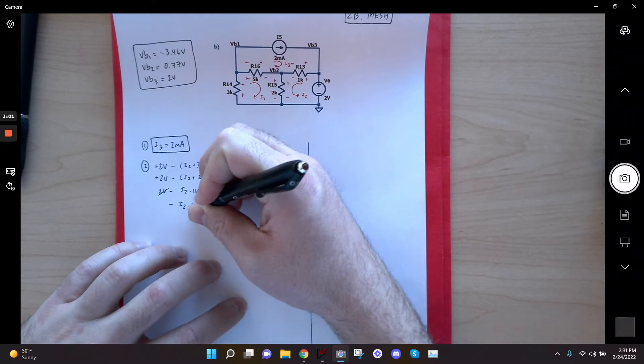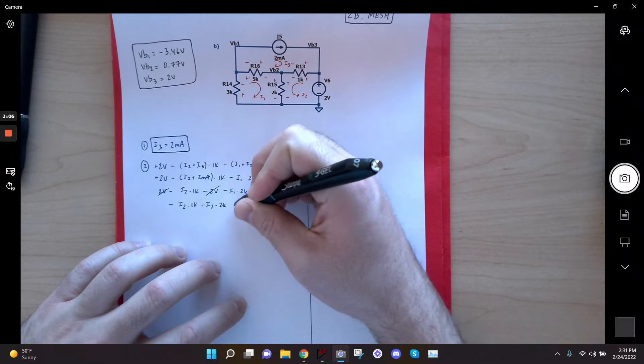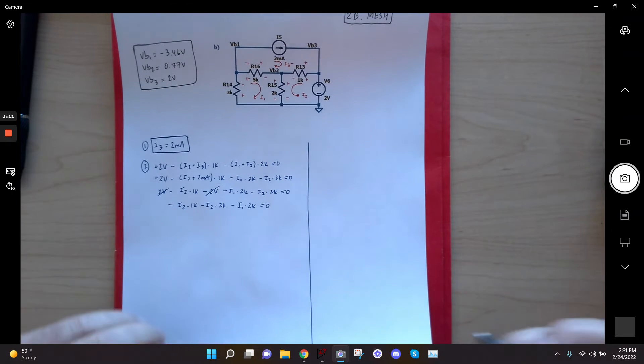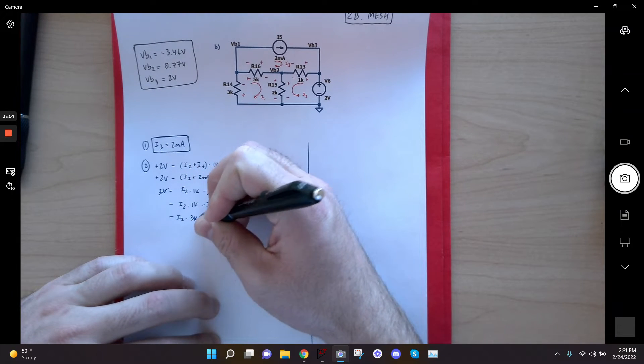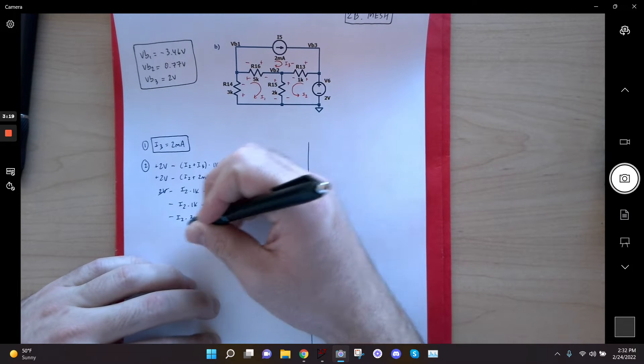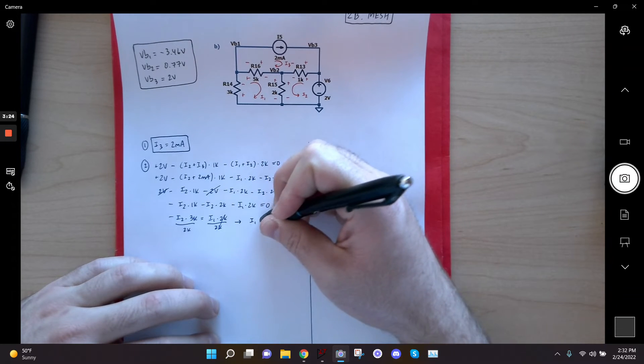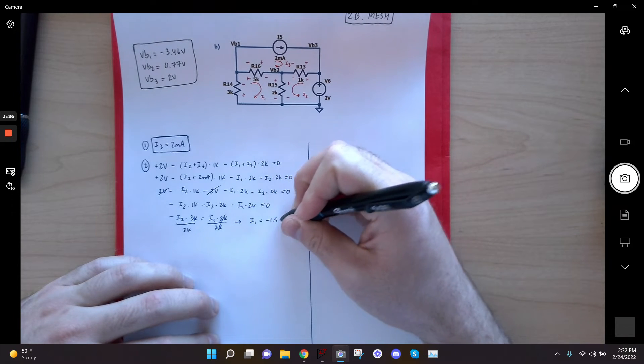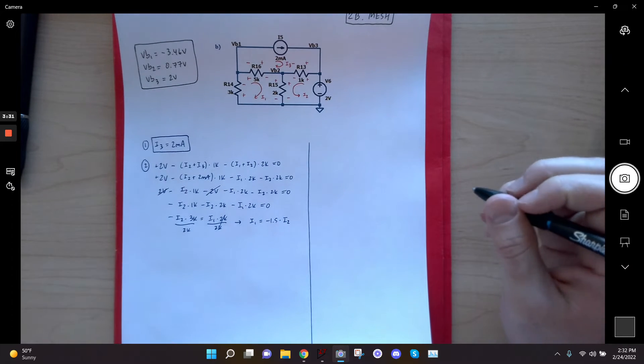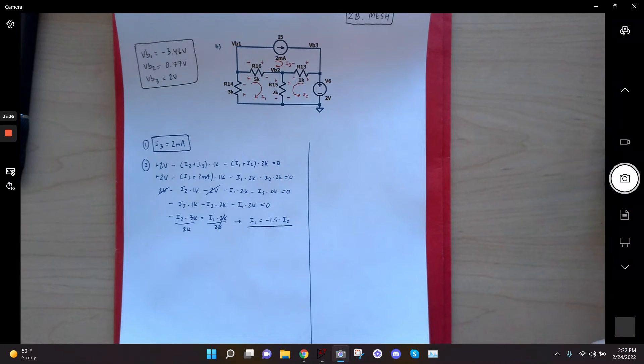It's totally fine. It doesn't invalidate this equation at all. So now I'm going to group my like terms. I get minus I2 times 3K equals I1 times 2K. And now I divide both sides by 2K. Those cancel, and I get that I1 is equal to negative 1.5 times I2. Right? So that's an equation. We don't know I1 and we don't know I2, but we do know the relationship between them.